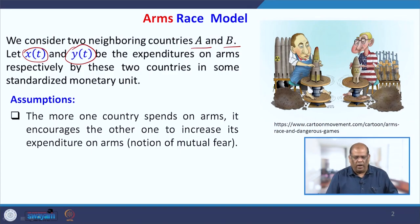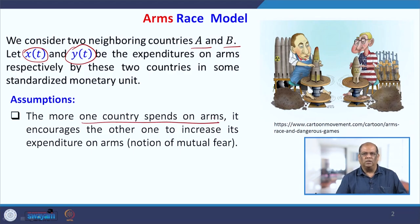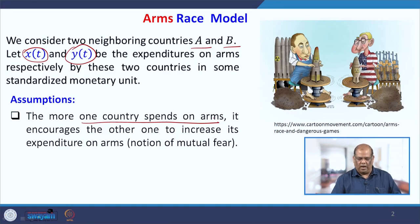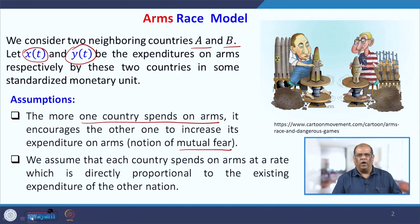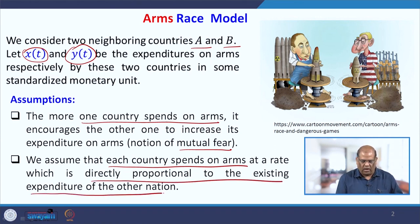To build the first model, and as models are based on assumptions, the first assumption is: the more one country spends on arms, it encourages the other to increase its expenditure on arms, because then the country becomes a bit nervous — they see that the other country has so much arms and so much technology, and there is a mutual fear.